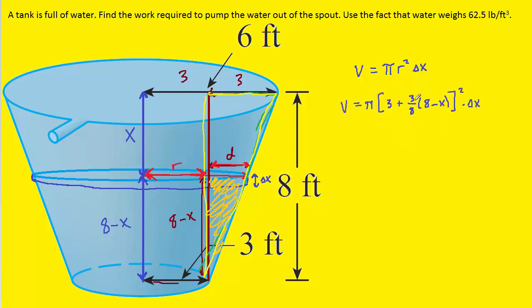Now what we can do inside these brackets is distribute the 3 eighths, just to simplify it a little bit. And after we distribute the 3 eighths times the 8, that's going to become a 3. And then we'll have minus 3 eighths X. This is all still squared. And then we have 3 plus 3, so we can actually call that 6. So now we have an expression for the volume of that very thin cylindrical portion of water.